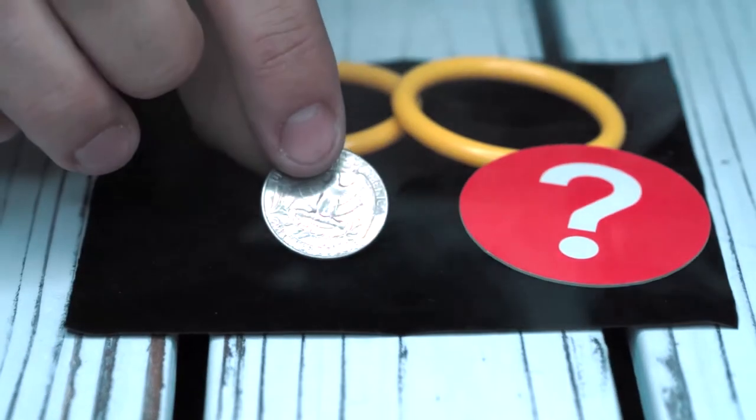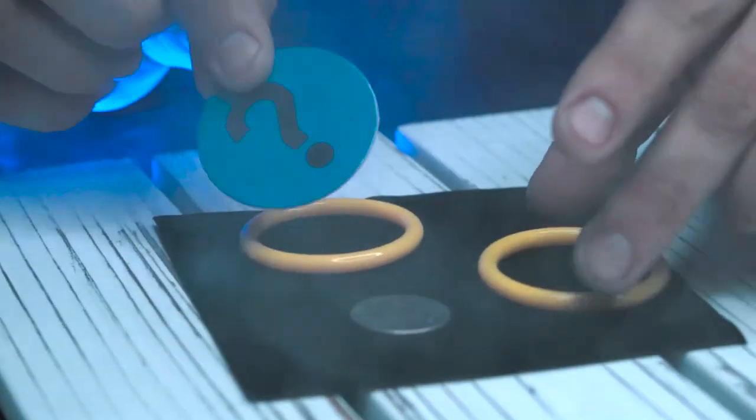Here's what happens. You borrow a coin from your friend and then place it on the black mat in front of you.